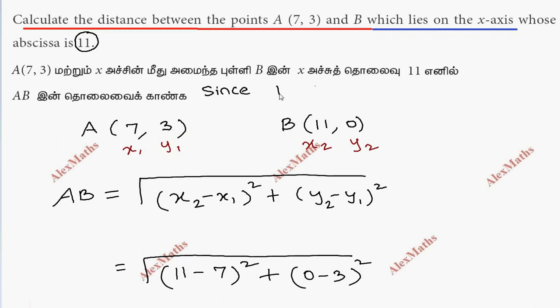Since B lies on the x-axis, the y-coordinate is 0.